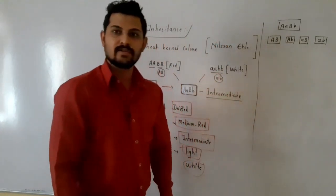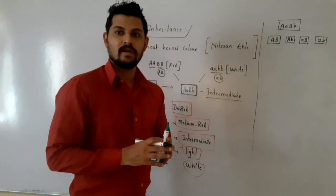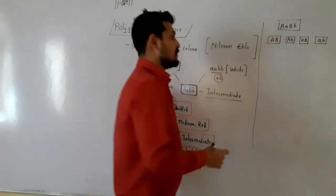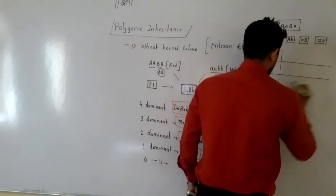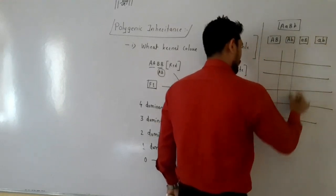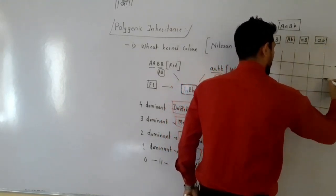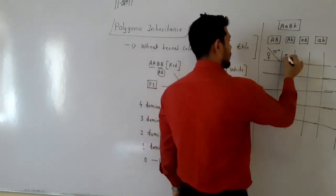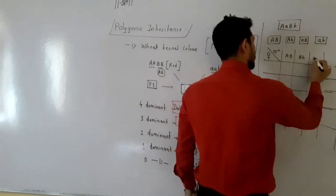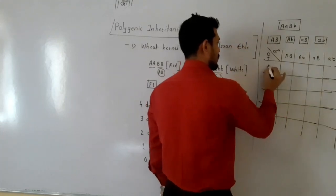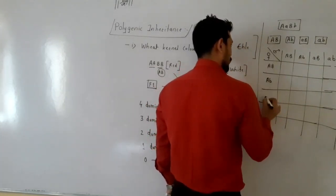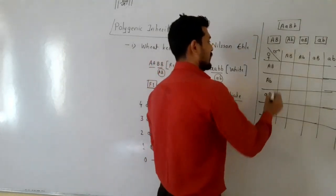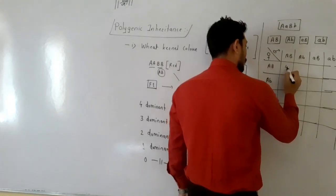When these four types of gametes from male and female are crossed, 16 combinations can be obtained. We can set up a Punnett square with gametes AB, Ab, aB, and ab on both axes. In the first combination AABB, all four genes are dominant.